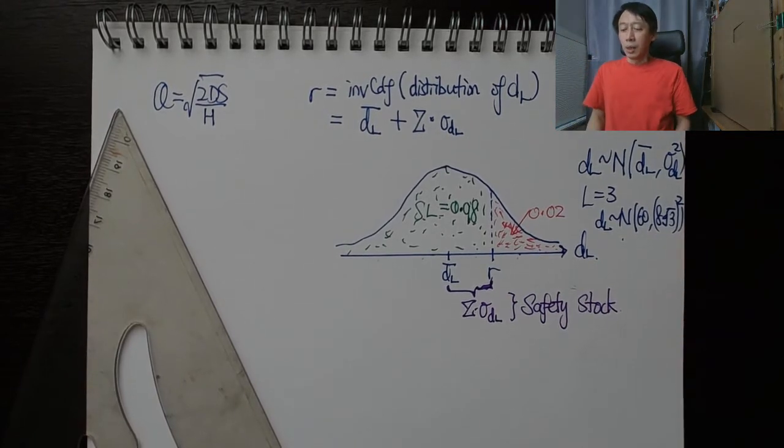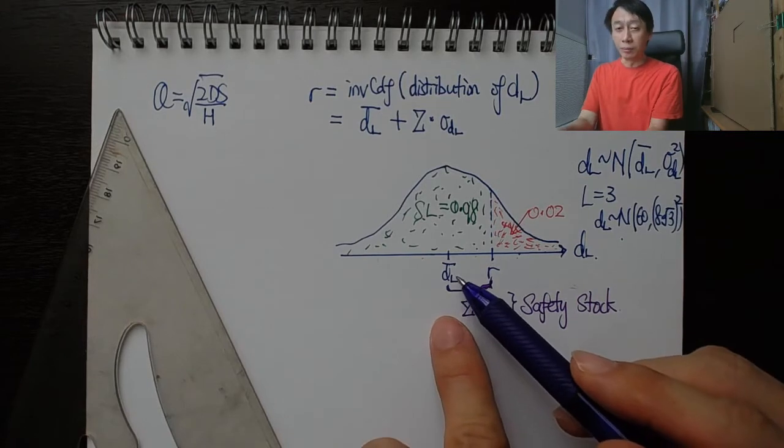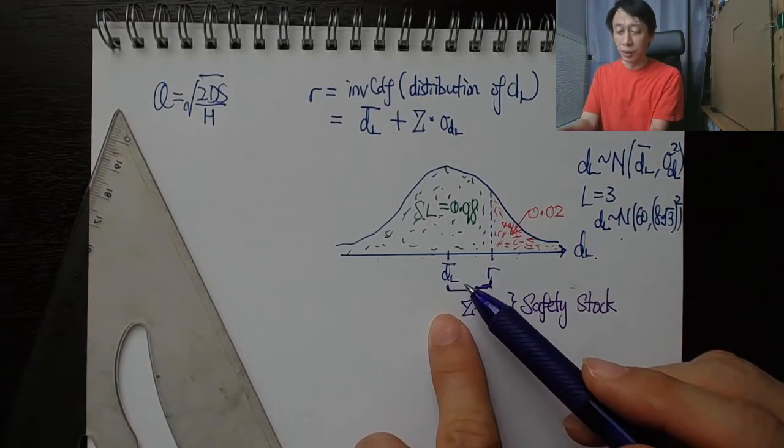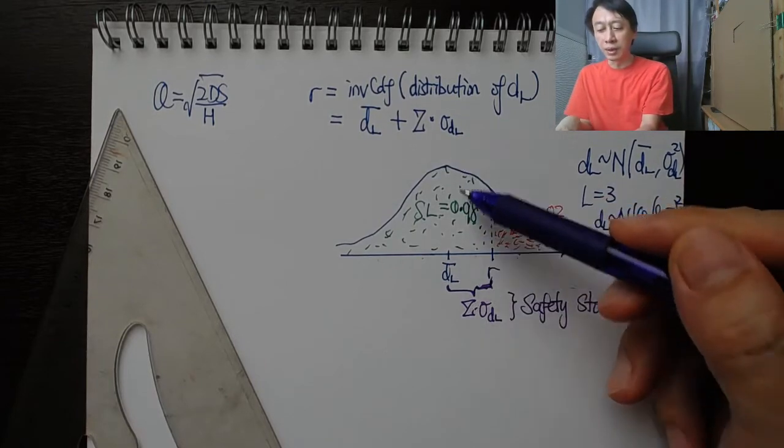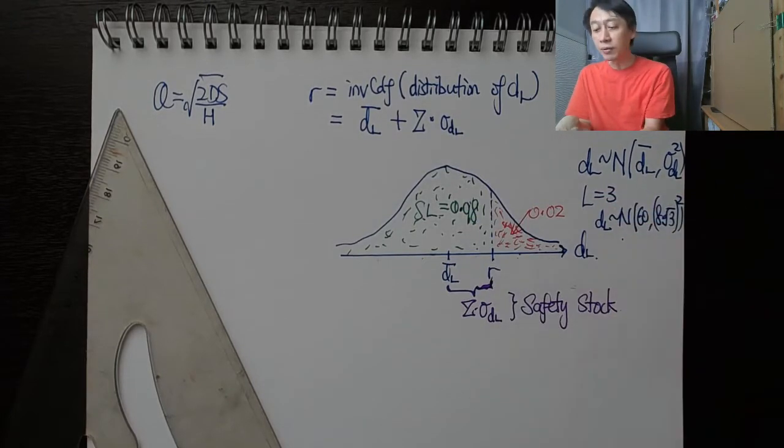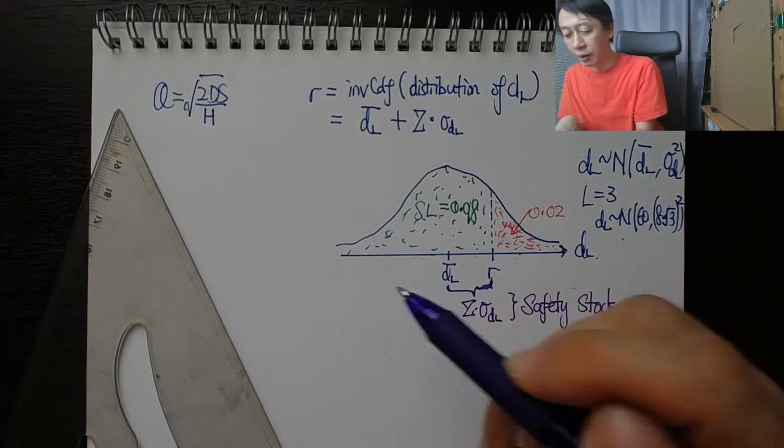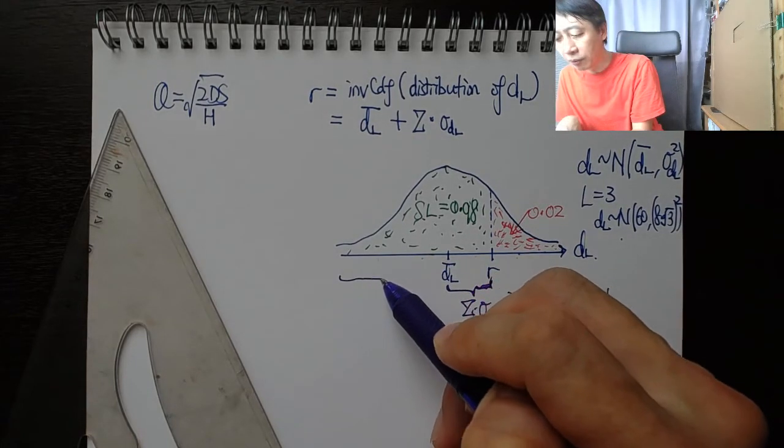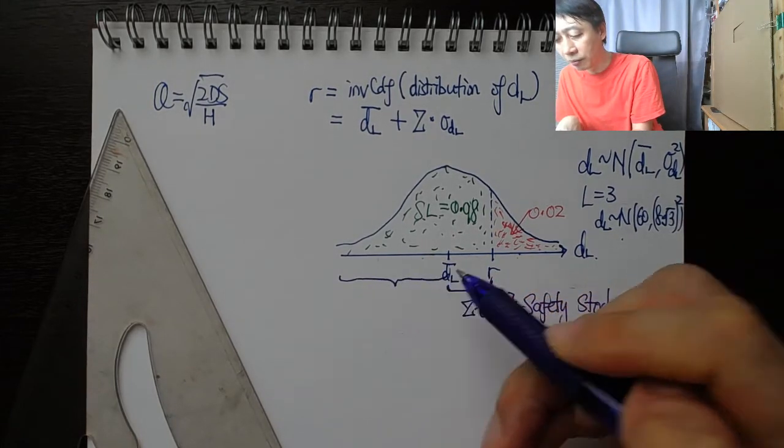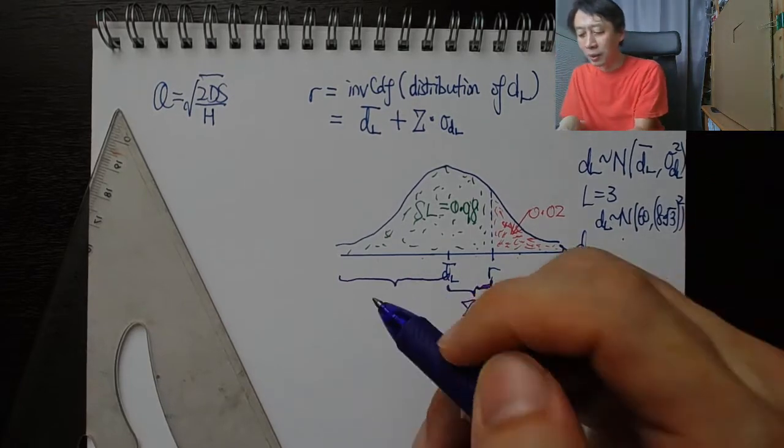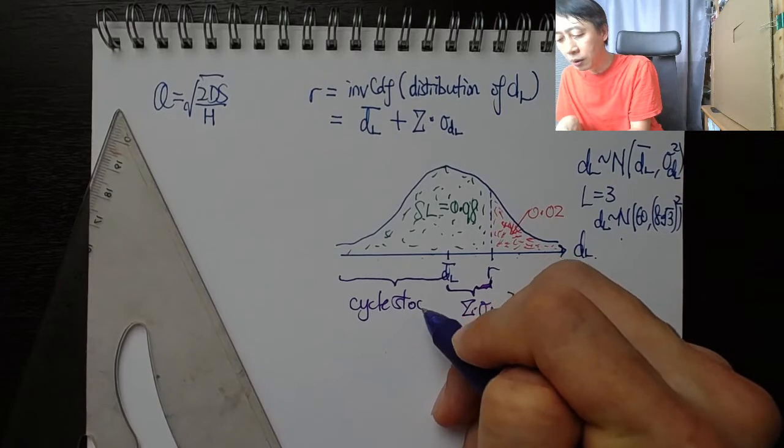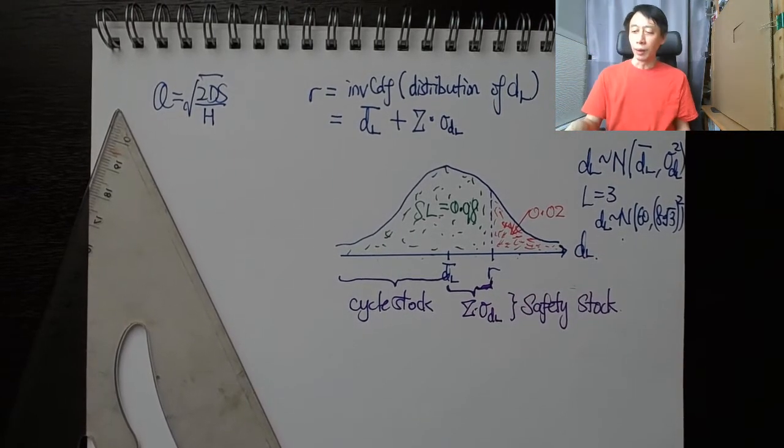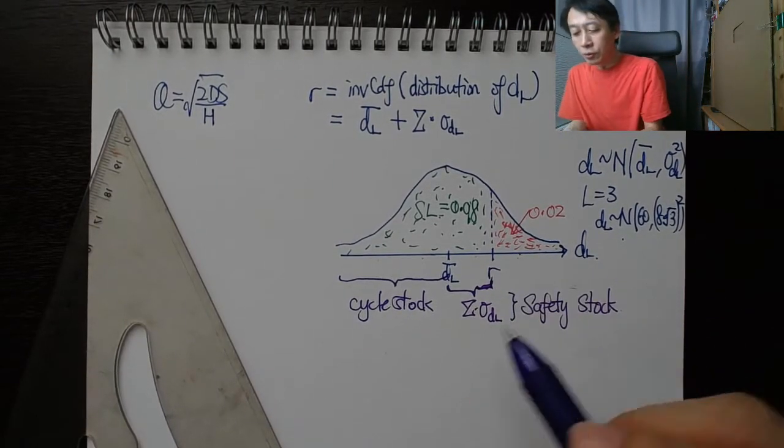If we reorder at dL bar, the average demand during lead time, then that would mean that our service level is 50 percent. Half the time we have items to sell, half the time we don't have items to sell. So the dL bar is called the cycle stock.